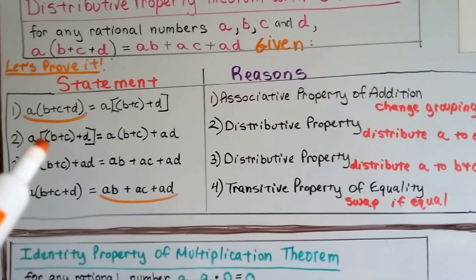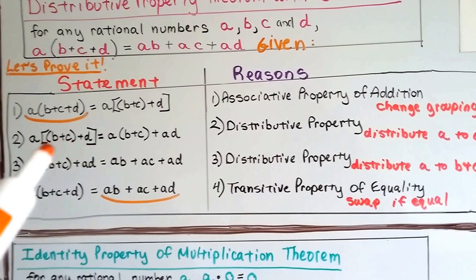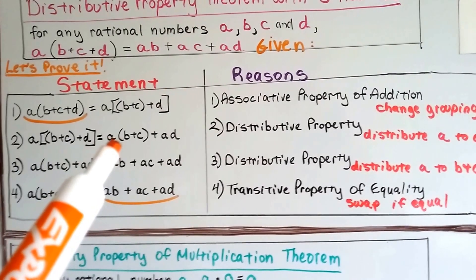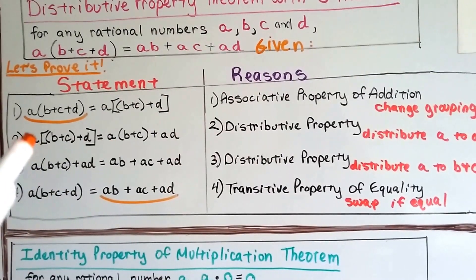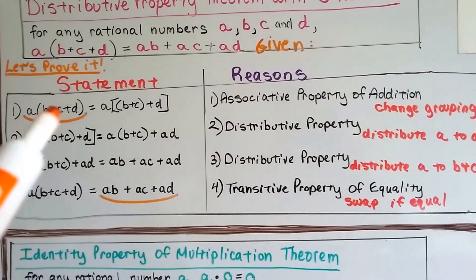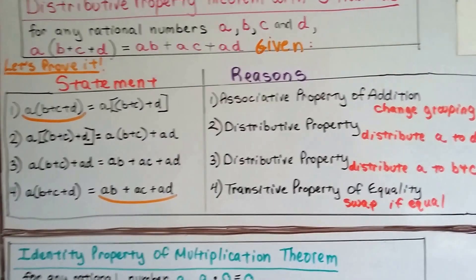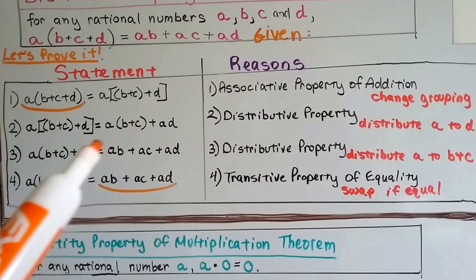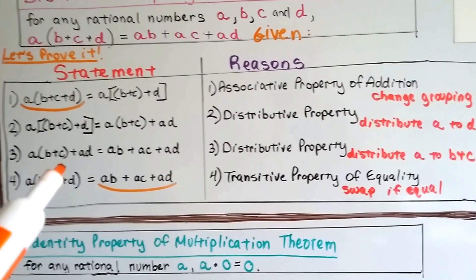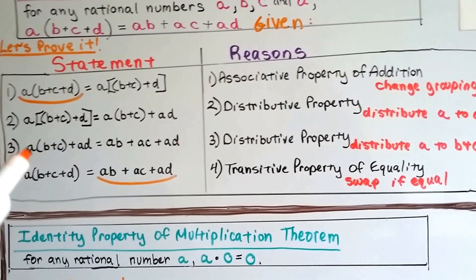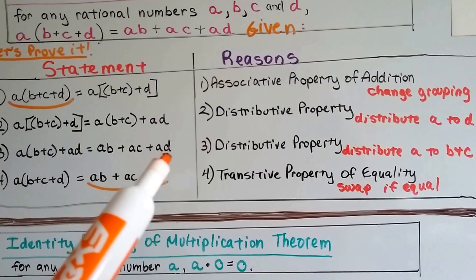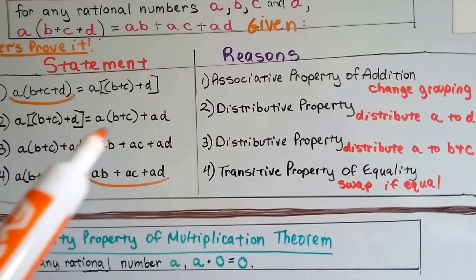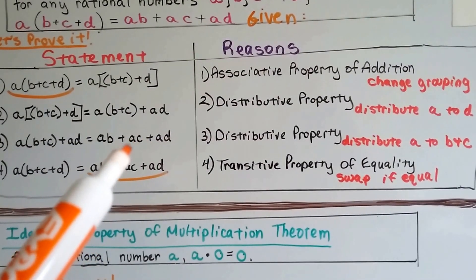Now this becomes the bracket grouping with a on the outside. Because of the distributive property, it equals a(b + c) + ad — we distribute a to the grouped (b + c) and to d separately. Then we distribute a further to get ab + ac + ad. That's the distributive property: we've now distributed a to b, c, and d.